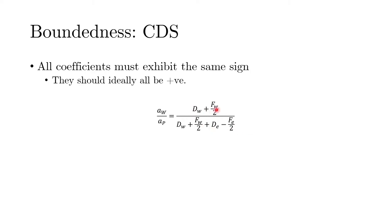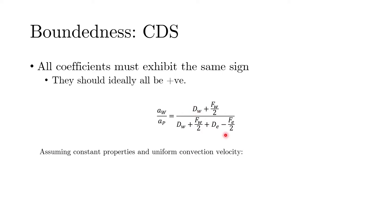Rather than working with individual west and east face contributions, we can simplify by assuming constant properties — constant density, diffusivity, grid sizes, and a uniform convection velocity. This changes all D_W and D_E to simply D, and F_E and F_W to simply F. When we do that, the numerator becomes D plus F over 2 and the denominator simplifies to 2D. Further simplification gives us one-half plus the Peclet number divided by 4, where Peclet number is the ratio of convection strength to diffusion strength.